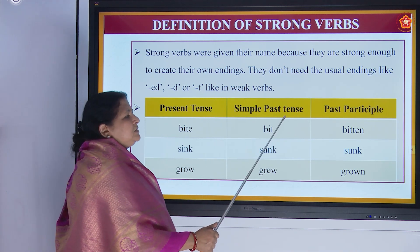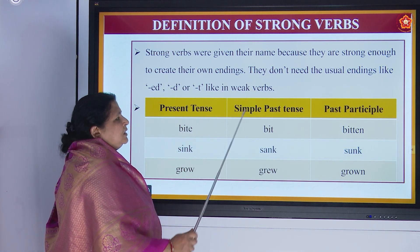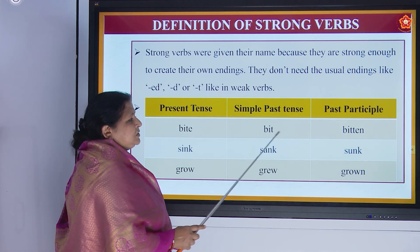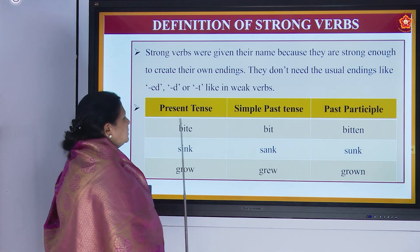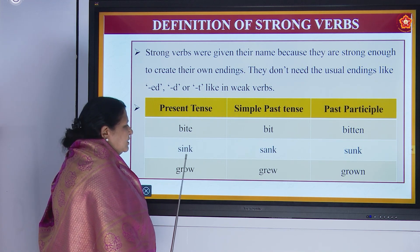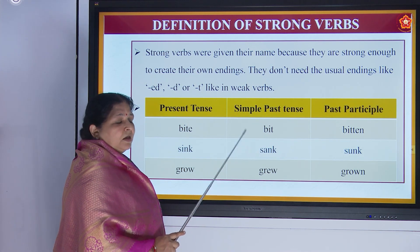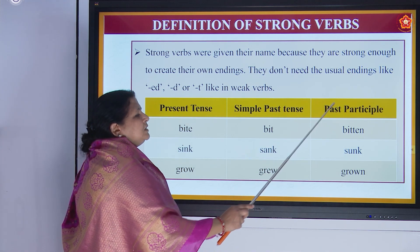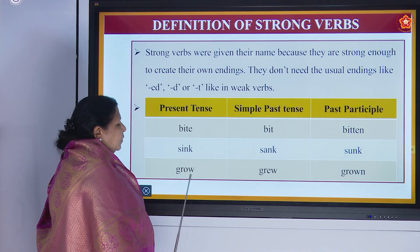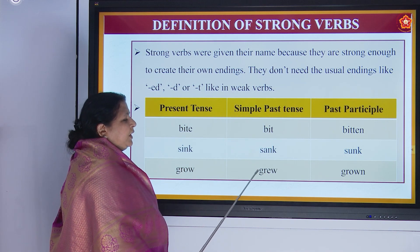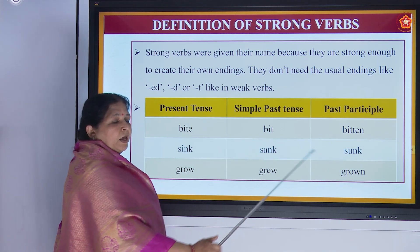Let us see examples. Present tense: bite; simple past tense: bit; past participle: bitten, B-I-T-T-E-N. Another word — present tense: sink, S-I-N-K; simple past tense: sank, S-A-N-K; past participle: sunk. Present tense: grow, G-R-O-W; simple past tense: grew, G-R-E-W; past participle: grown, G-R-O-W-N.